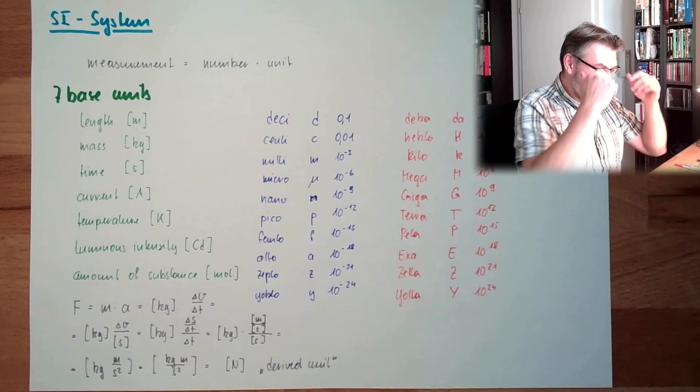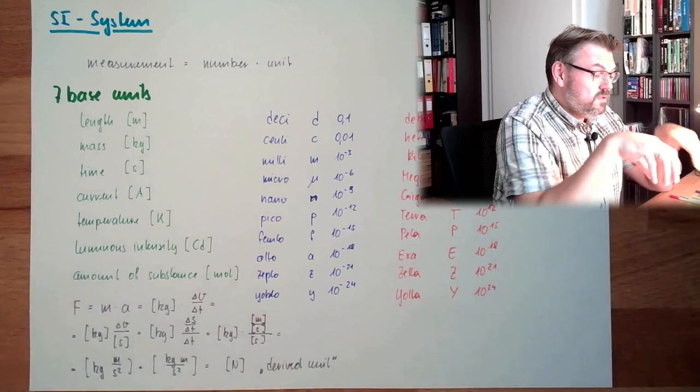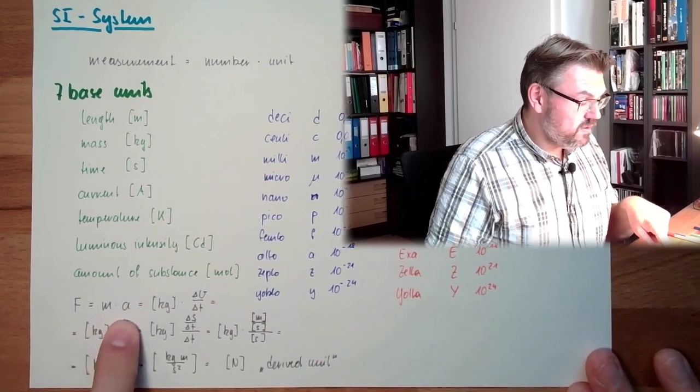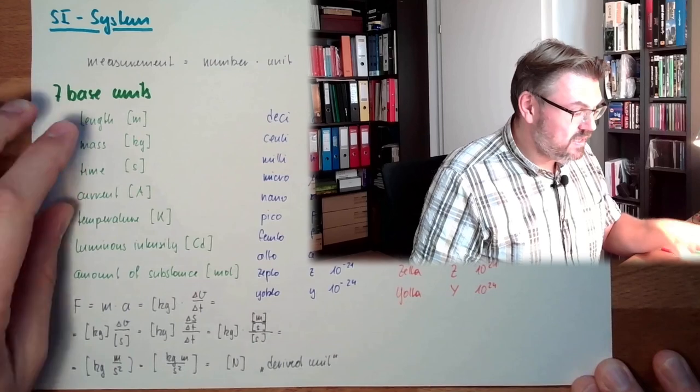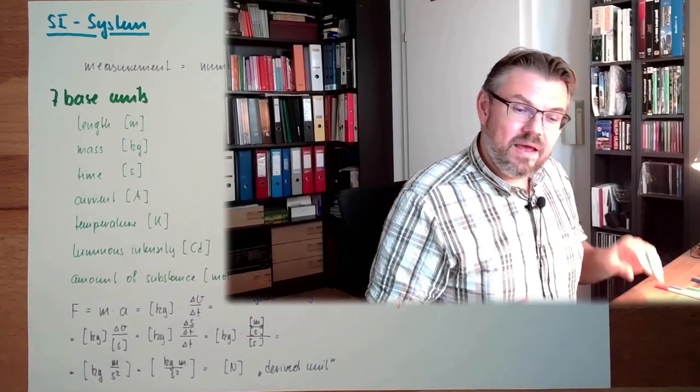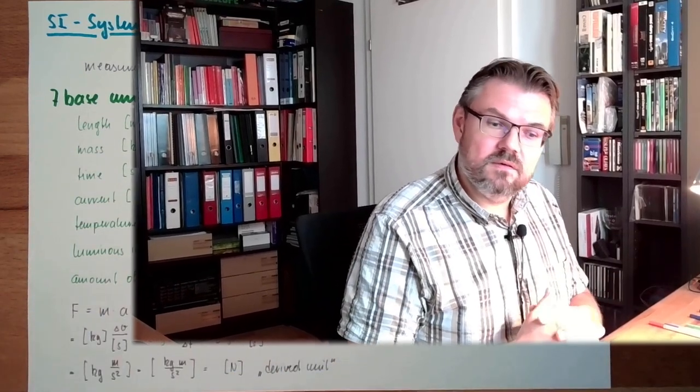So this is the SI system. Important is, that if you're using a physical law like this, and you put in those values as base units, in base units, in SI units, then the result will also be in a base unit, or as a standard unit, without those things here. Well, sometimes, it's not very convenient. I give you one example.